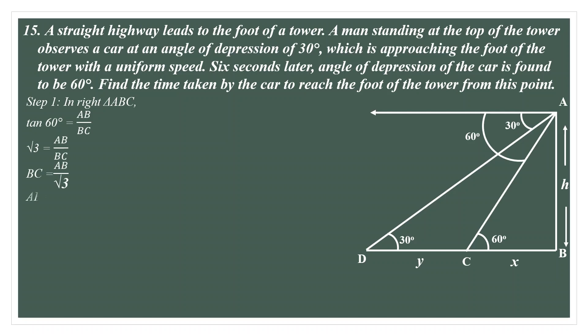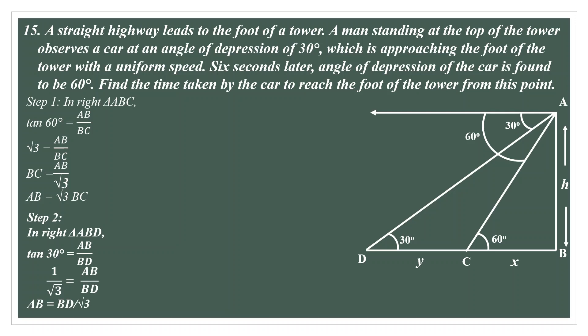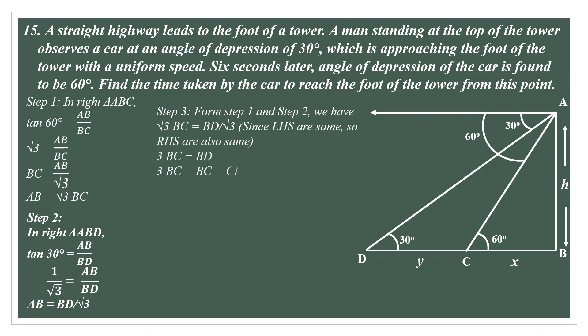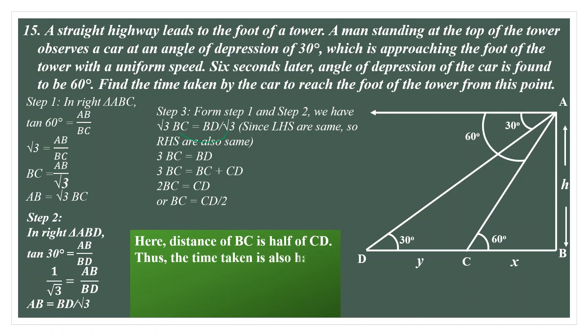In triangle ABC, applying tan 60 degrees gives H by X, that is AB by BC. From here, AB equals root 3 times BC — this is step 1. In triangle ABD, applying tan 30 degrees gives AB upon BD, from which AB equals BD divided by root 3 — this is step 2. Equating the two results, root 3 times BC equals BD divided by root 3, which means 3 times BC equals BD.